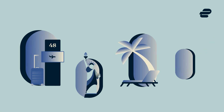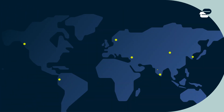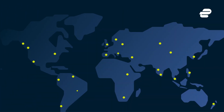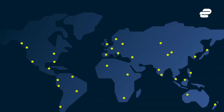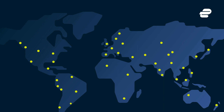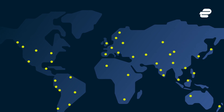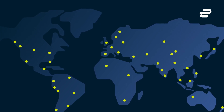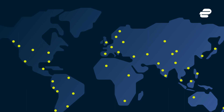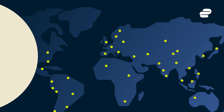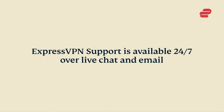If you'd like to get an IP address from another location, the ExpressVPN network spans the globe with ultra-fast servers in 94 countries. If you need help, just contact ExpressVPN support, which is available 24-7 over live chat and email.